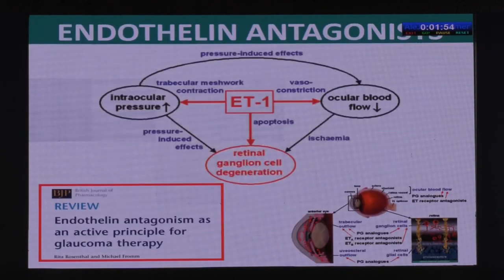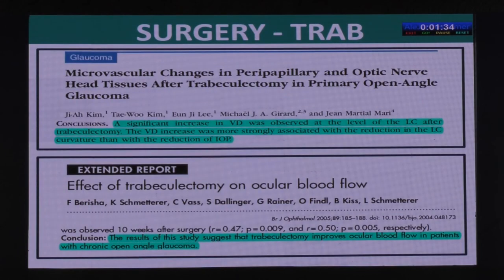As discussed regarding migraine, endothelin-1 causes increased constriction of the trabecular meshwork raising IOP, and causes vasospasm which causes migraine and reduces ocular blood flow. Endothelin antagonists are coming to market and could deal with both these issues. And of course, surgery — trabeculectomy — by lowering intraocular pressure will cause an increase in ocular perfusion pressure.